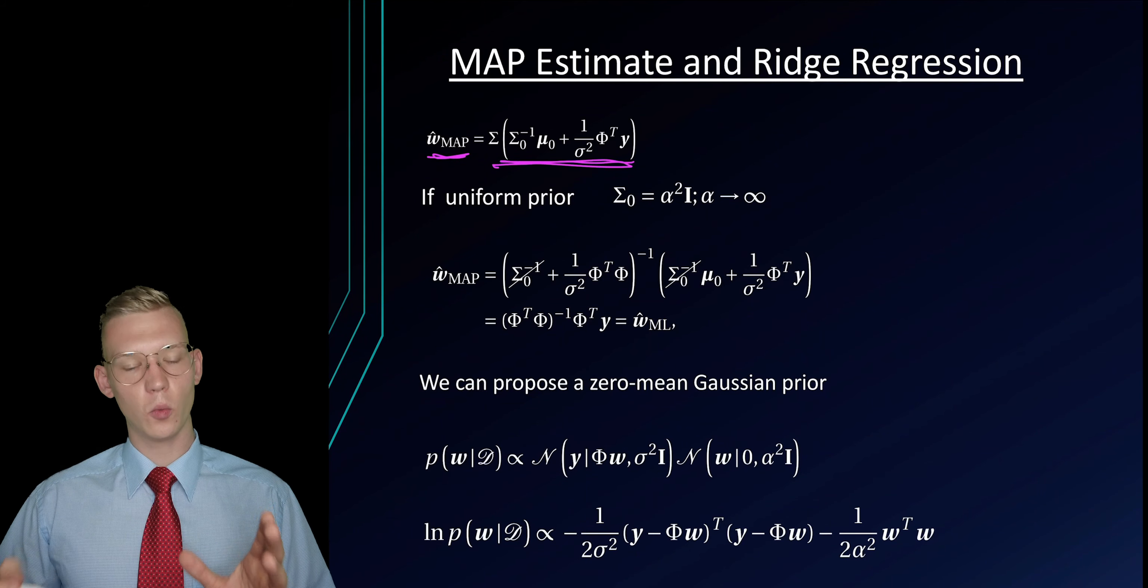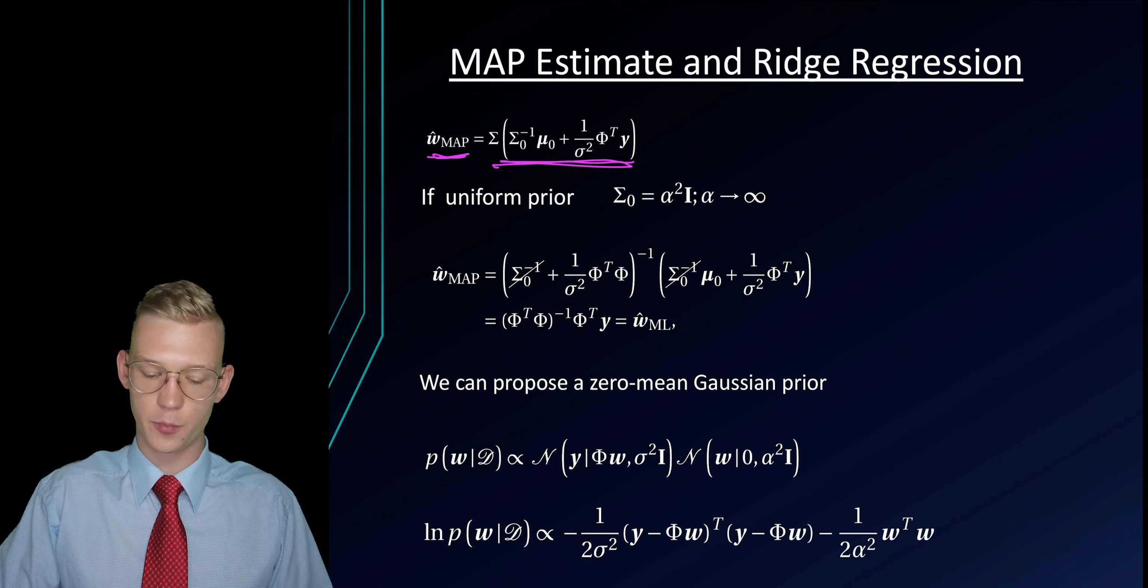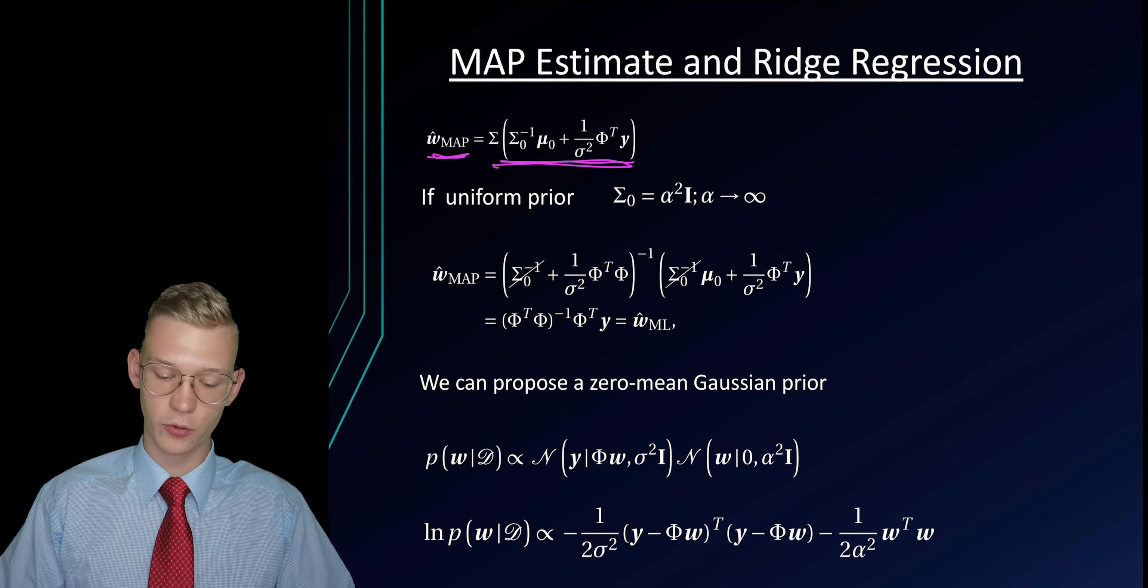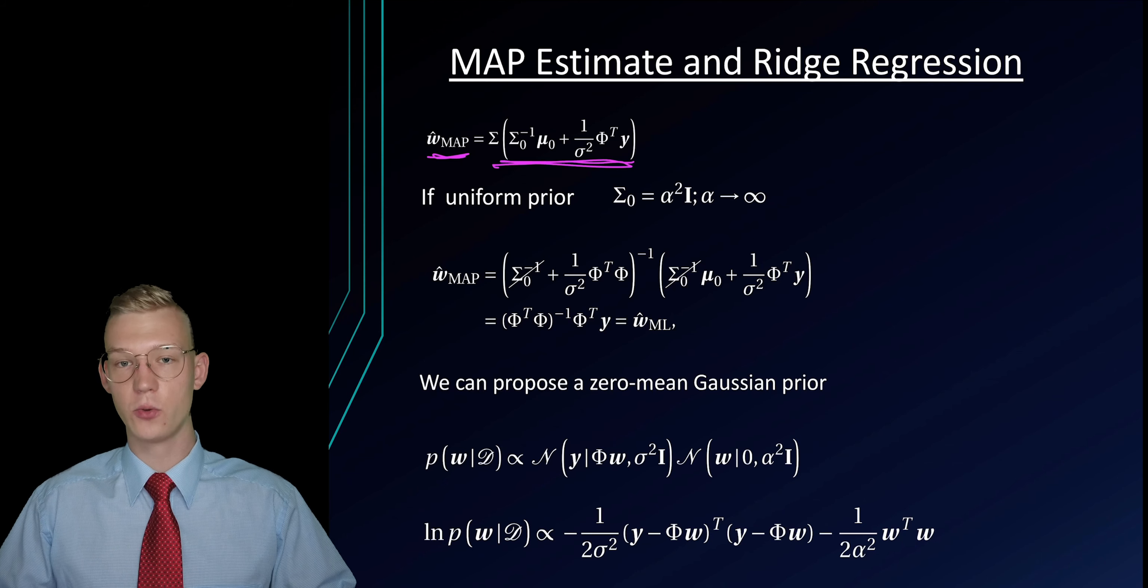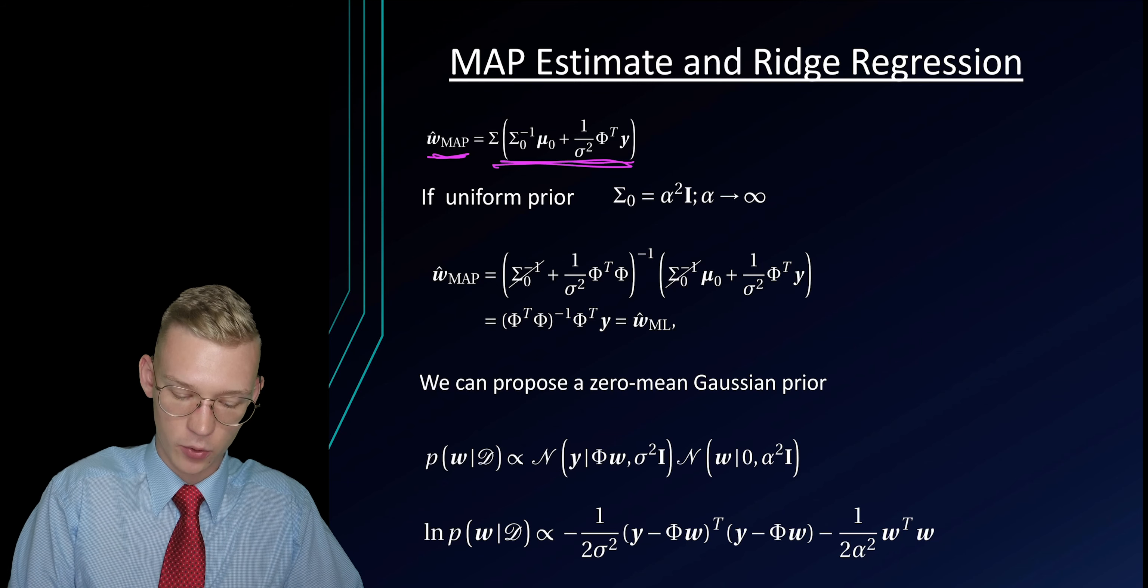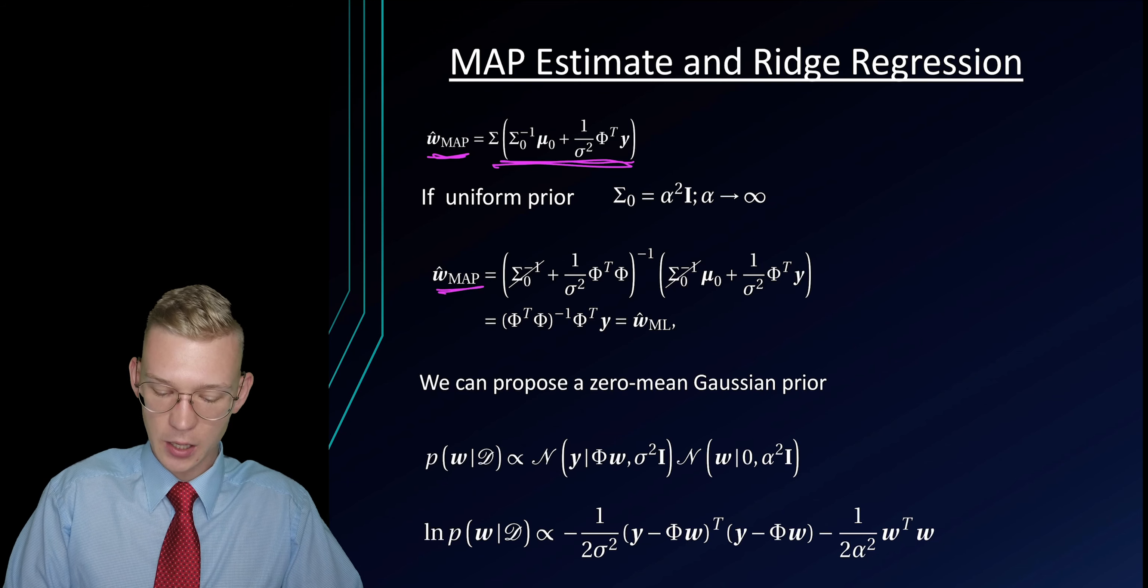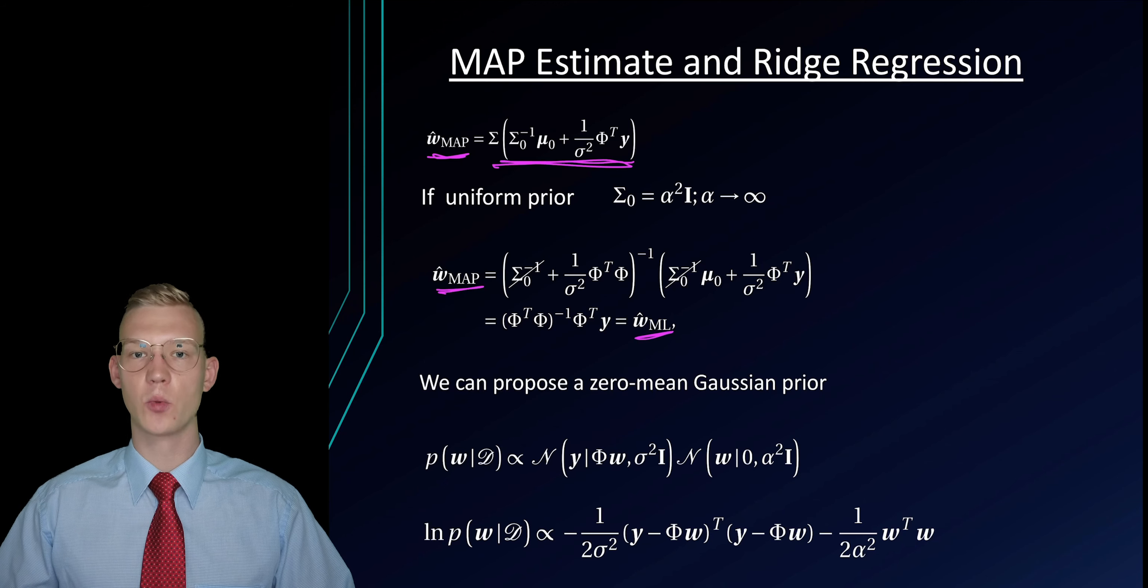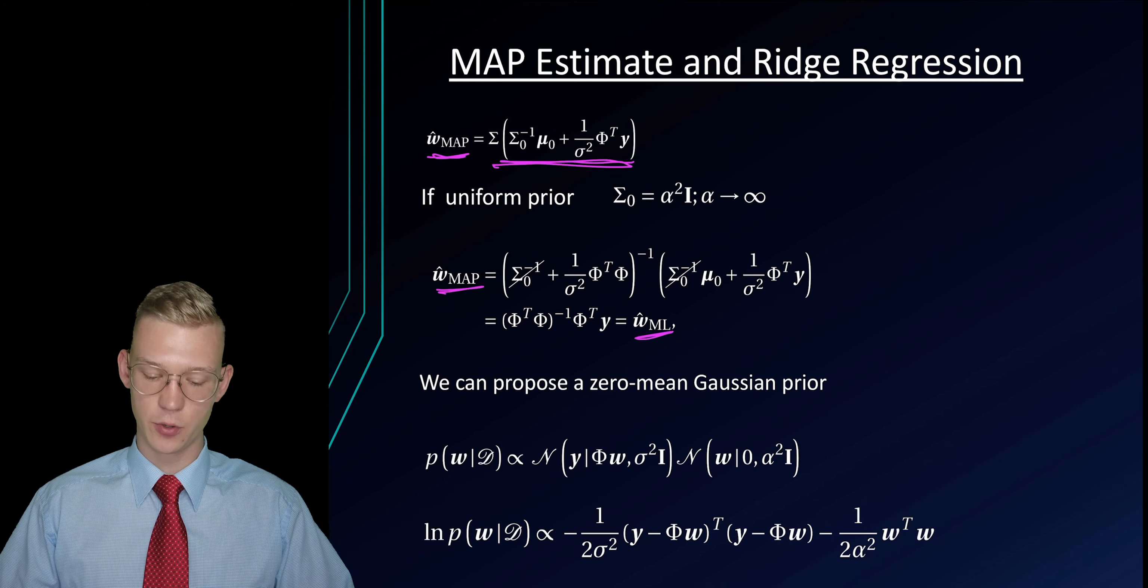If we now say we have a uniform prior, so we do not have a Gaussian as a prior, but just a uniform prior where each value is equally likely, we say that our maximum a posteriori will at the end equal the maximum likelihood approach, the same that we had in the frequentist approach to regression.